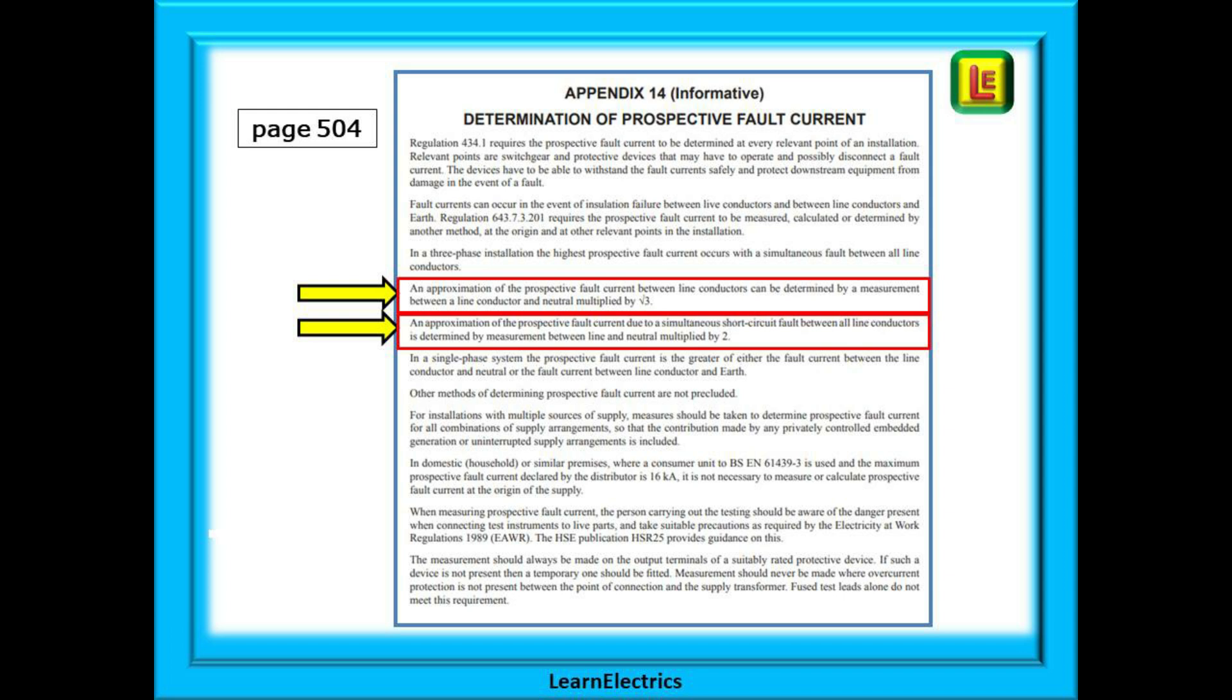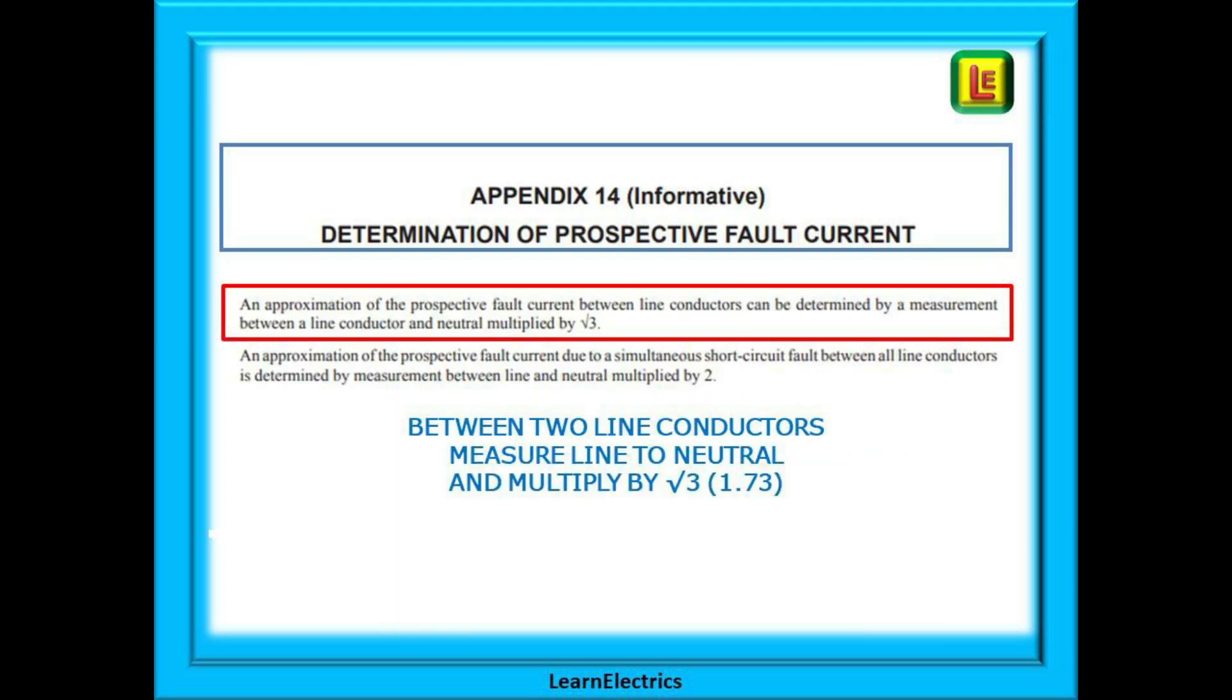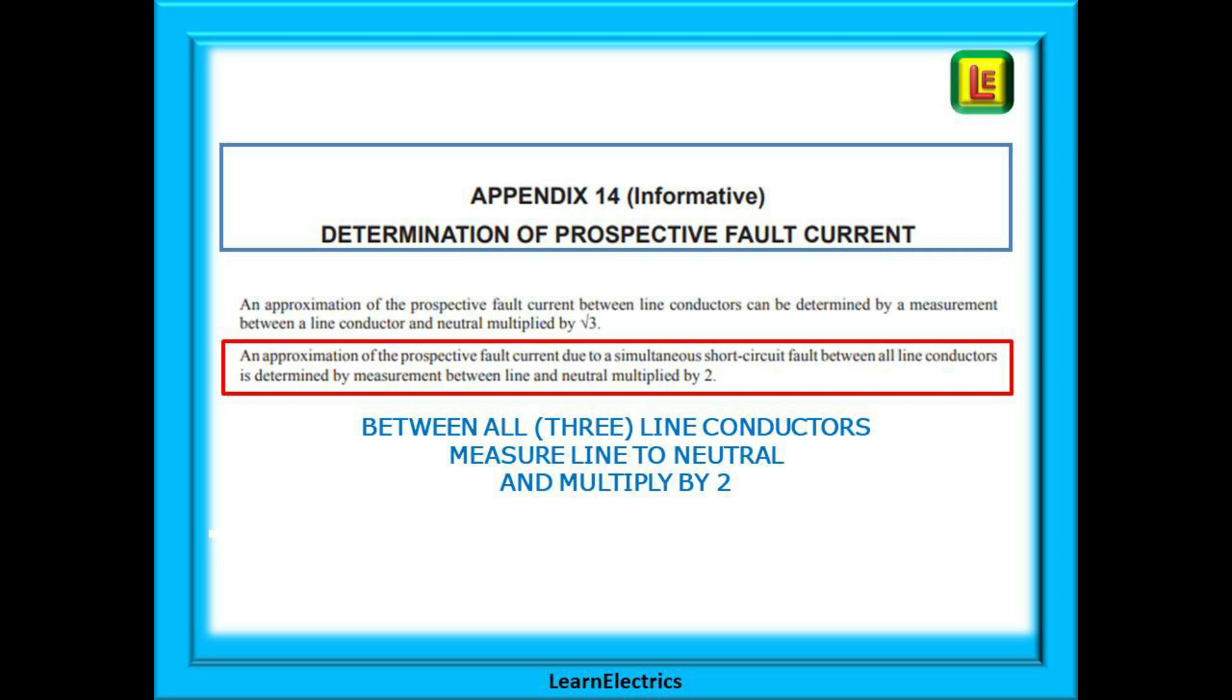We can begin by looking at appendix 14 in the wiring regulations as this is where it all starts. You will find this on page 504 and the two important sentences are highlighted. The first sentence of interest is about a short between two of the line conductors. We can calculate the approximate prospective fault current, the PFC, by first measuring between line and neutral and then multiplying this number by the square root of three, which is 1.73. The second sentence considers a short between all three line conductors at the same time, and it tells us to calculate the fault current by taking the line to neutral value and then multiplying this number by two.